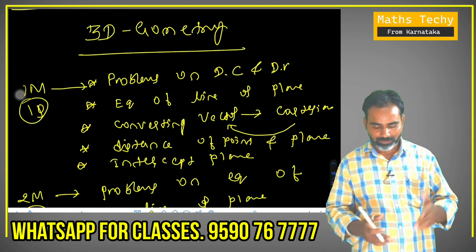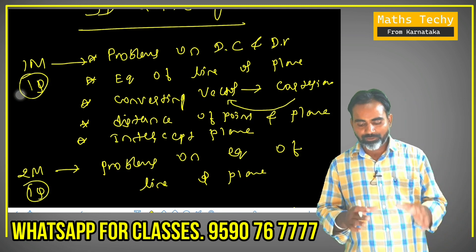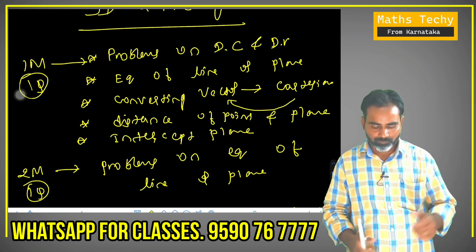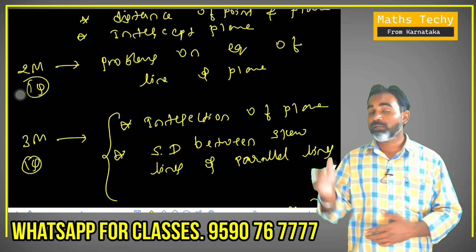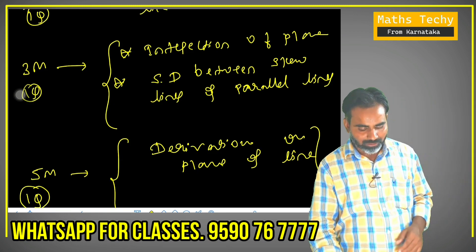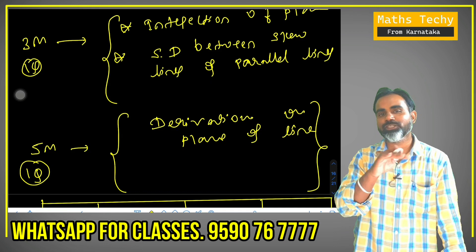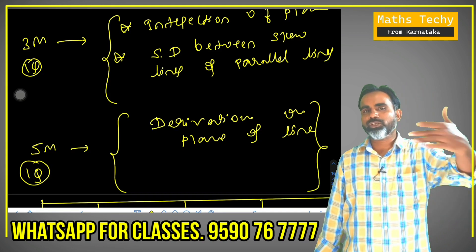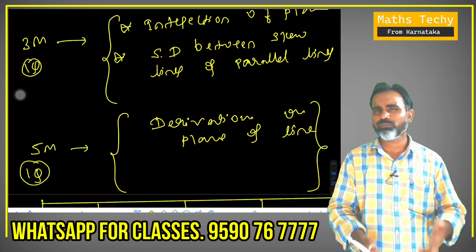3D geometry: direction cosines and direction ratios, equation of line and plane. Convert vector form — 1 mark. Distance of a point on the plane, plane in intercept form. In 2 marks: equation of line and plane, angle between two lines, angle between two planes, angle between the line and the plane. In 3 marks: intersection of plane, or shortest distance between skew lines, or shortest distance between parallel lines. You can expect problems based on equation of line or plane — vector Cartesian — 3 marks.